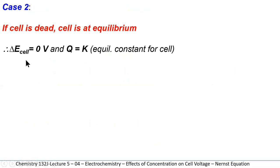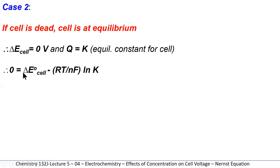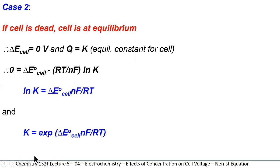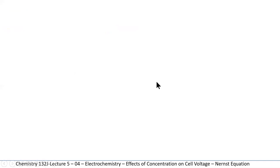In case two, if the cell is dead, the cell is at equilibrium. The voltage E of the cell is zero volts, and in this case Q equals K, the equilibrium constant for the cell. So zero equals E-naught of the cell minus RT divided by NF times the ln of K. Therefore, the natural logarithm of K equals E-naught of the cell times NF divided by RT, and K equals e to the power of E-naught times NF divided by RT. Very useful equation.